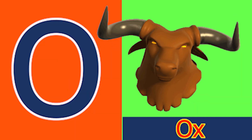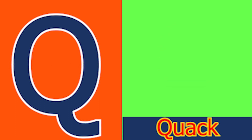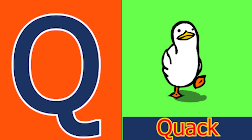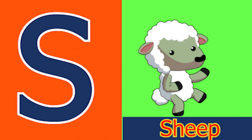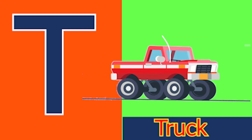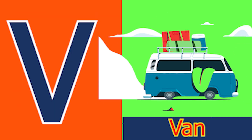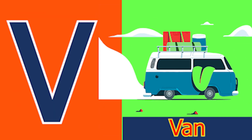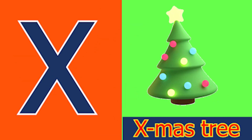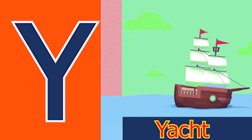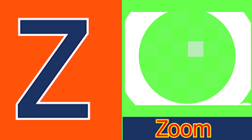O for ox and P for pan, Q for quack and R for rain, S for sheep and T for tub, U for utensil, B for van, W for wheel and X for accessory, Y for yacht and Z for zone.